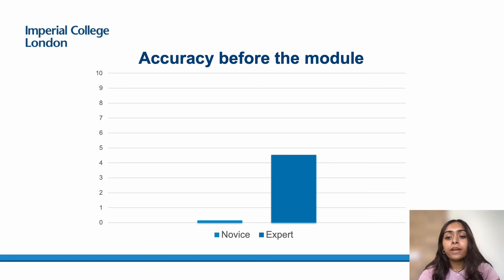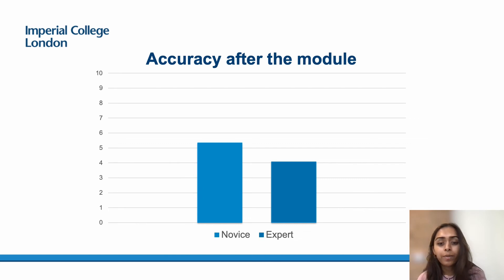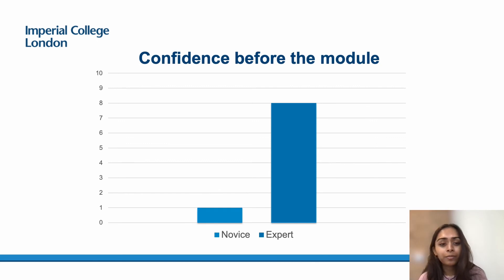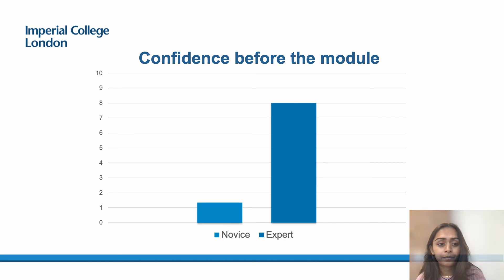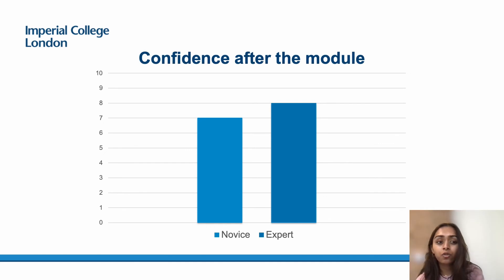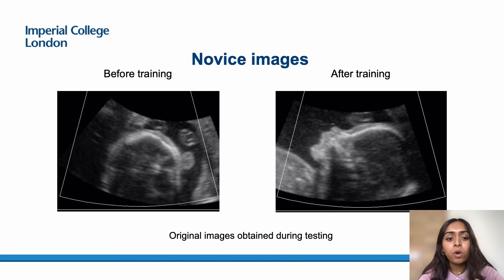Prior to the module, novice scores were very low — at zero. But following module completion, accuracy scores were much higher. This improvement was also seen in novice confidence: prior to module completion, novices rated their confidence at one, but following module completion the confidence score greatly improved. Here's an example of screen captures from the pre-test and the same novice's image in the post-test, clearly showing the images improved dramatically in the space of an hour.